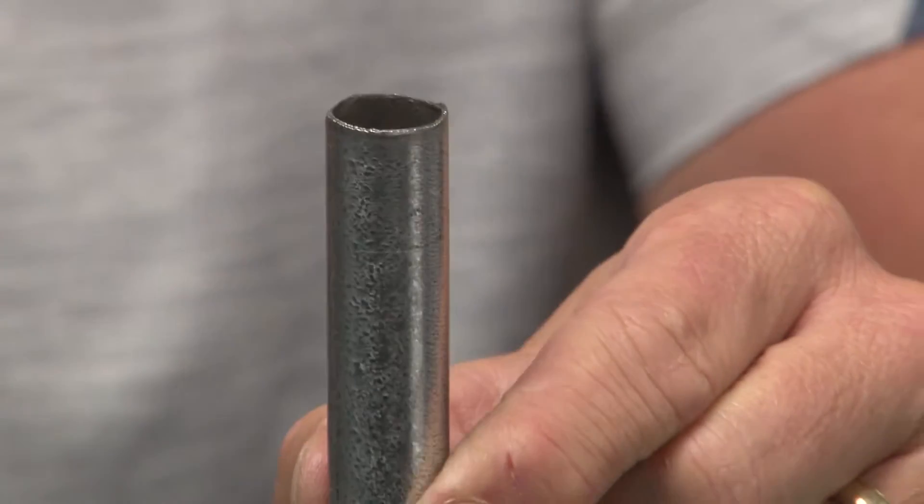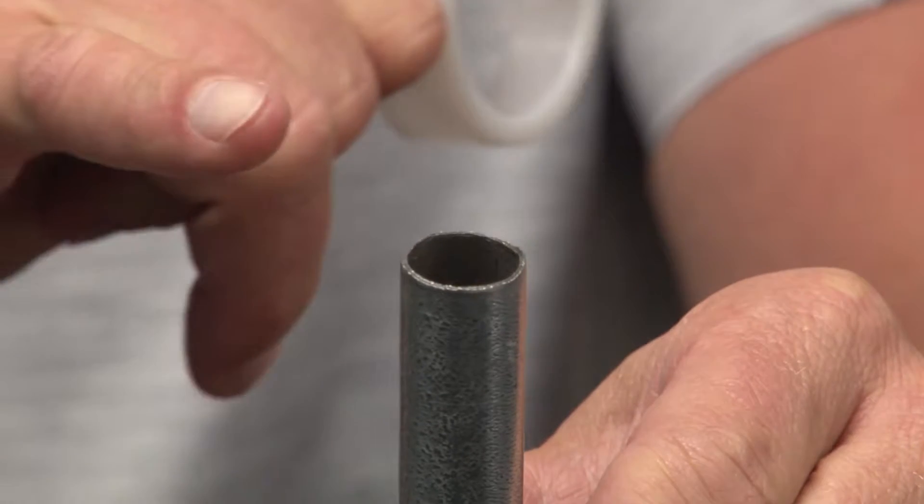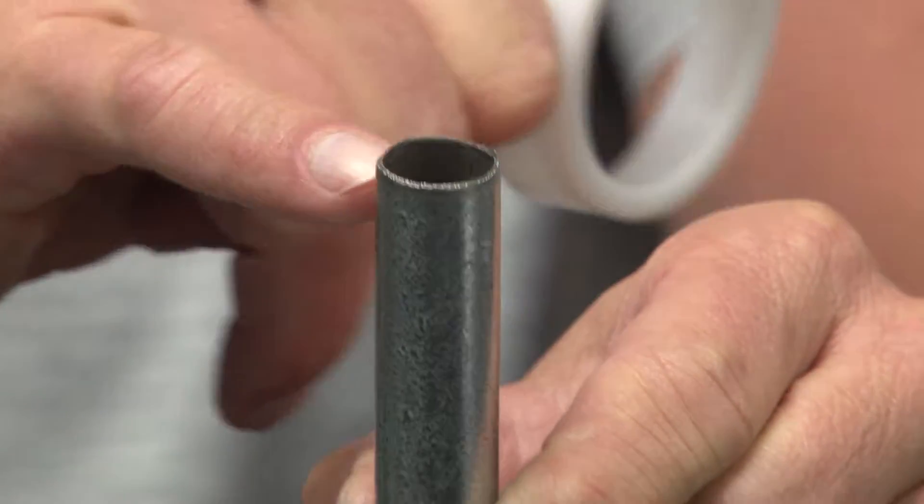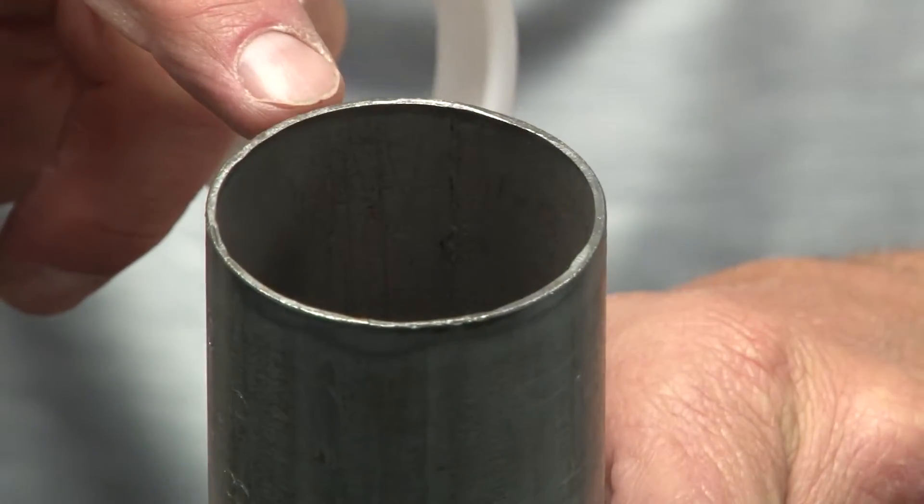Very important to maintain safe conditions when it transitions out of the conduit. As you can see, field cut conduit has a sharp rough edge that often can cut the jacket on the cable.